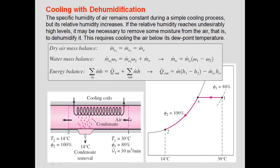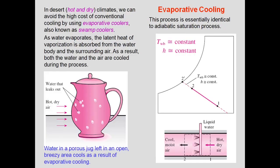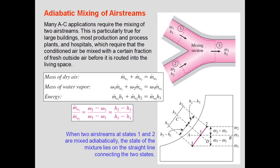In cooling and dehumidification, air is first cooled until it reaches dew point temperature, after which condensate forms and moisture content drops. This is shown on the chart from point 1 to point X on the saturation curve. Evaporative cooling involves spraying liquid water that evaporates directly into the moist air stream.